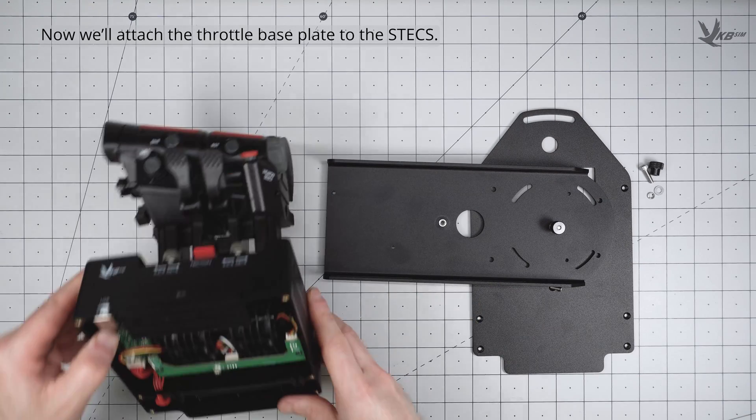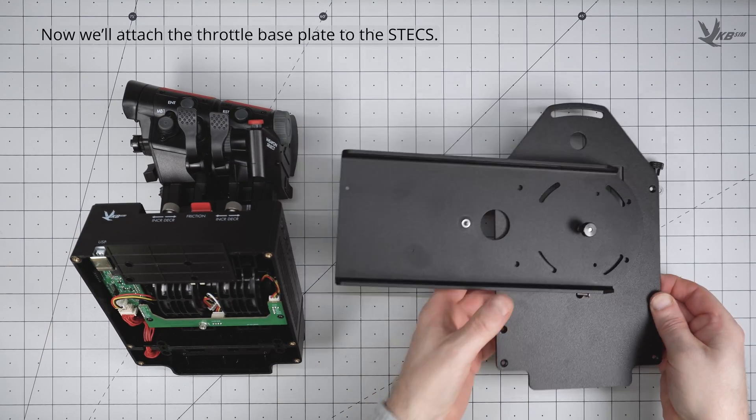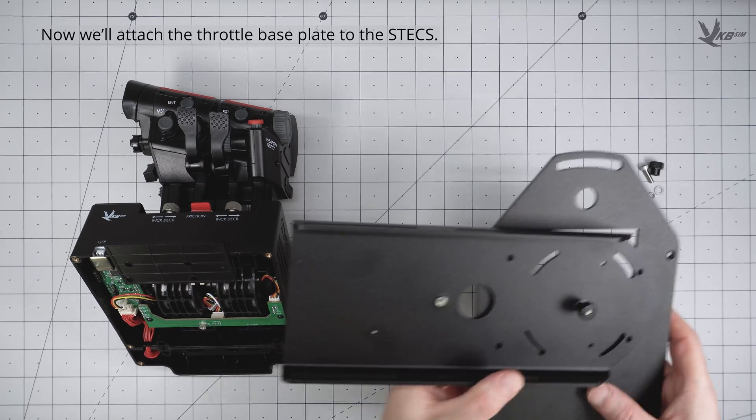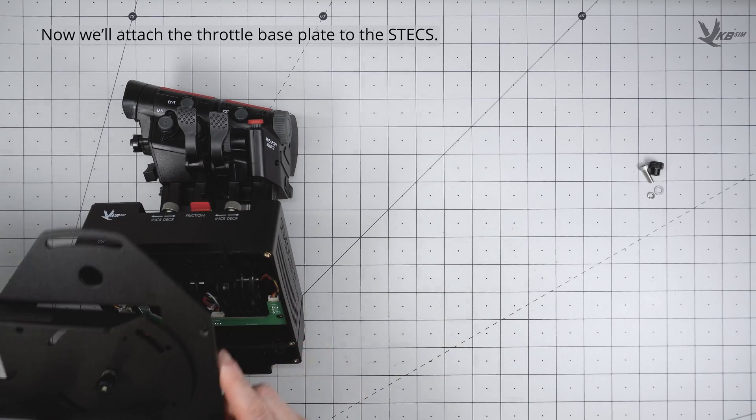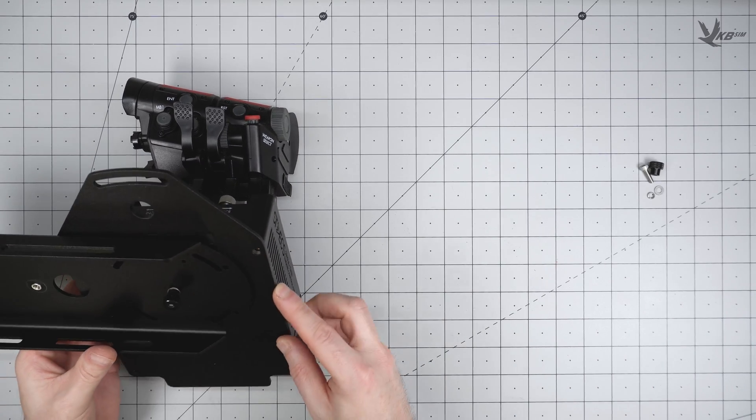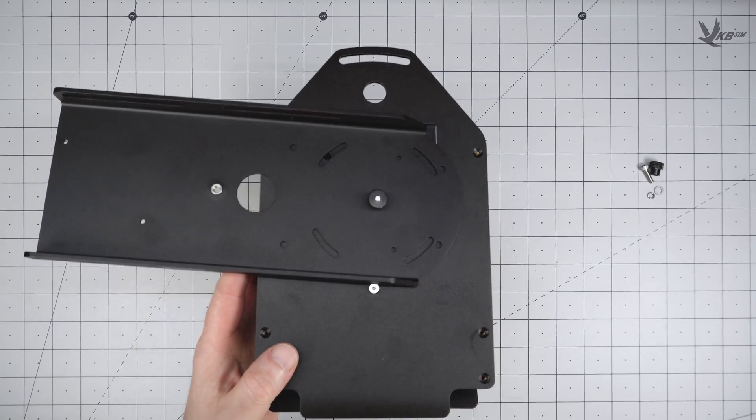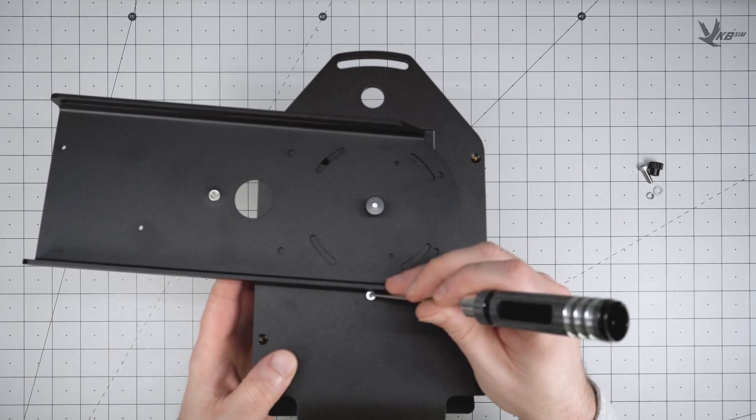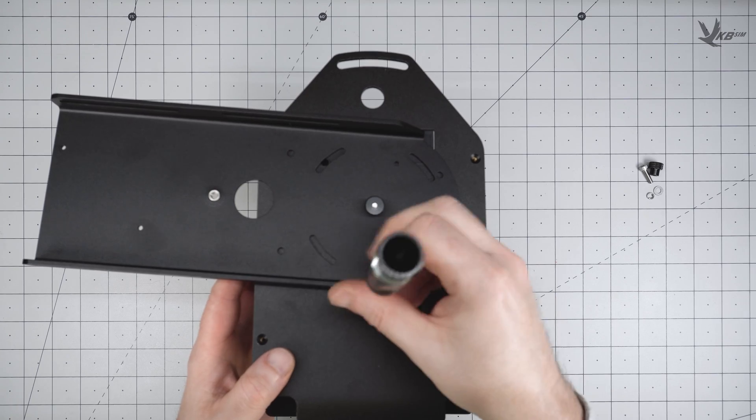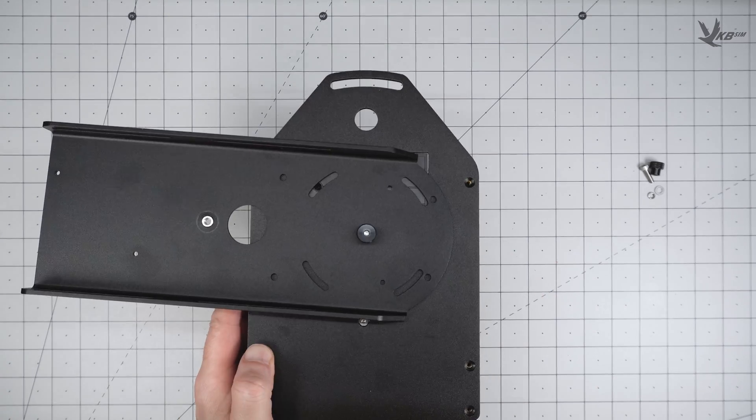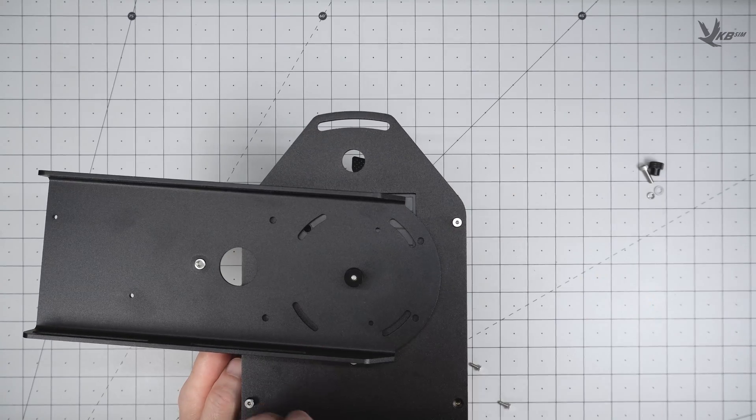Now we will attach the base plate to the STECS. With the STECS upside down, get the screw holes lined up between the throttle base plate and the STECS housing. Start from the screw we had prepared earlier in the center of the plate, and then add the four corner screws, swiveling the universal plate as necessary to access the holes. Screw down the screws evenly in a criss-cross pattern, rather than fully tightening down any one screw all at once.